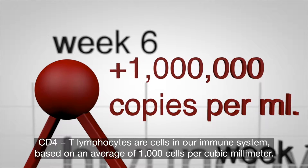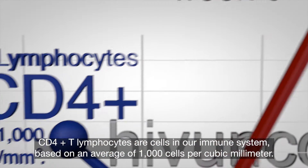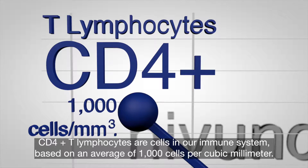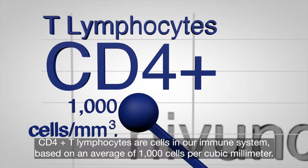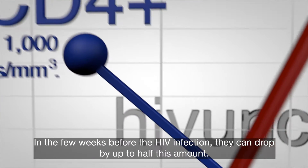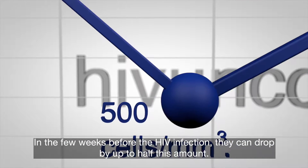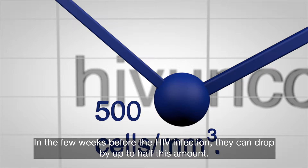CD4+ T lymphocytes are cells in our immune system, based on an average of 1,000 cells per cubic millimeter. In the few weeks following HIV infection, they can drop by up to half this amount.